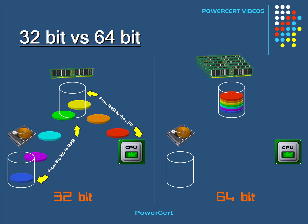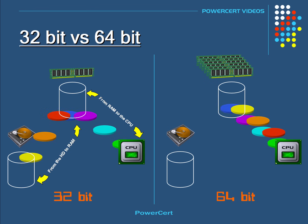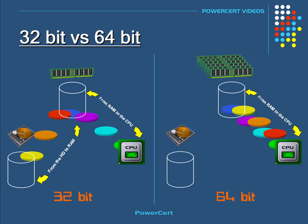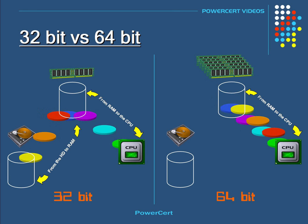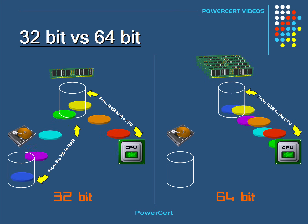In a 64-bit system, it's able to store a lot more memory than 4 gigabytes, which means that more data can be stored into the faster RAM than on a slower hard drive. Because it can store more data into RAM, the computer is able to run a lot faster. So in a nutshell, this is why a 64-bit system is faster than a 32-bit system.